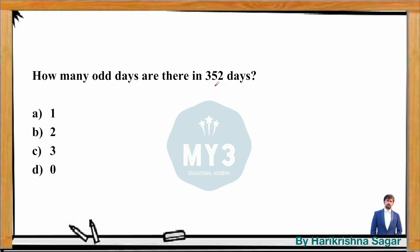How many odd days are there in 352 days? Simply take 352 and divide by 7: 7 fives are 35, we are left with 2. So the remainder is 2, meaning the answer is 2 odd days.